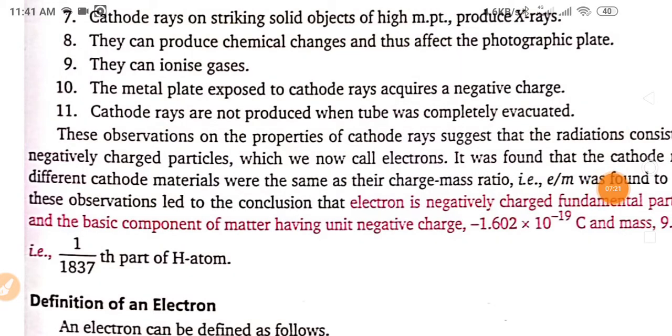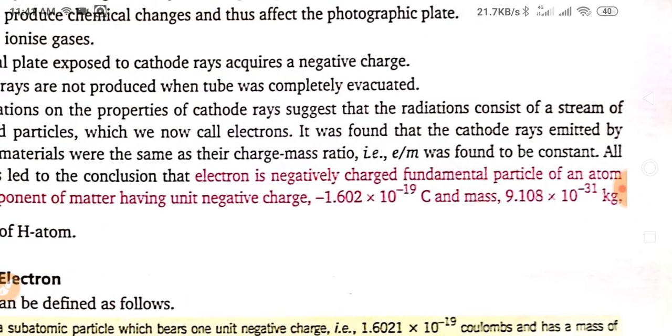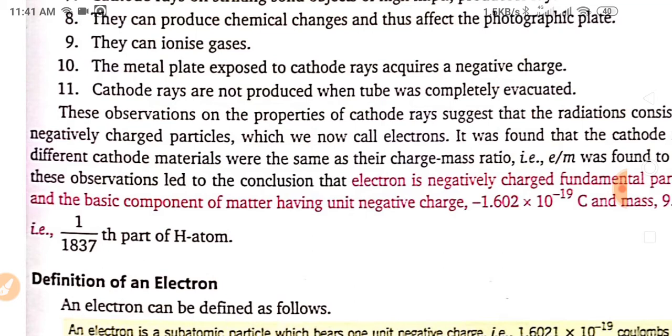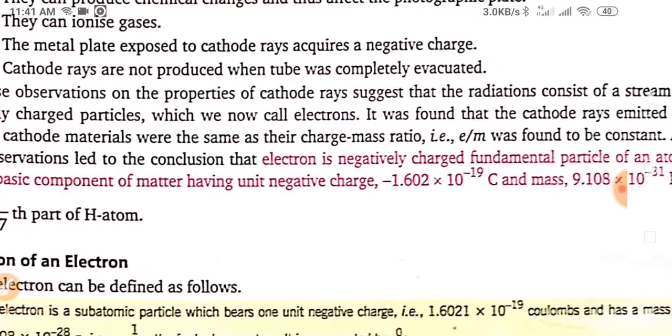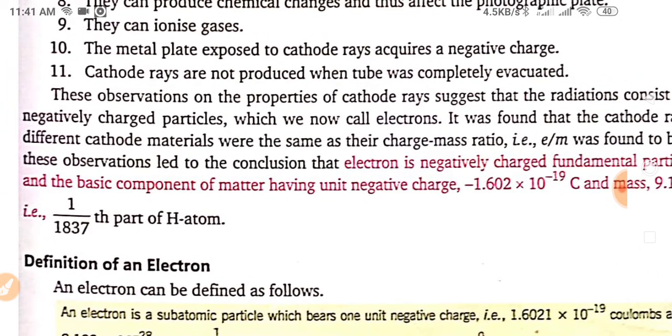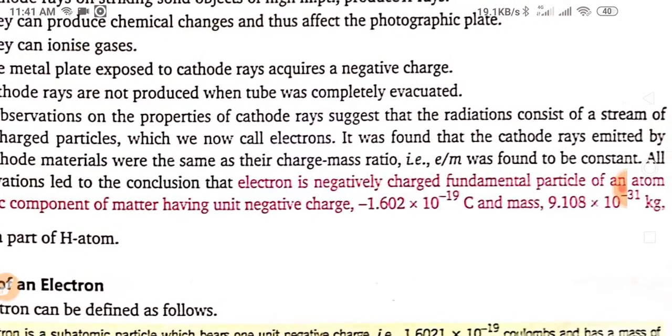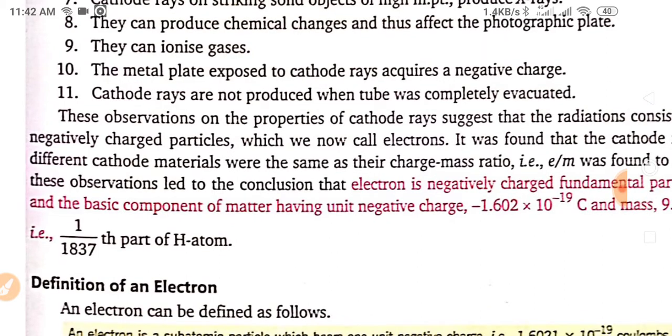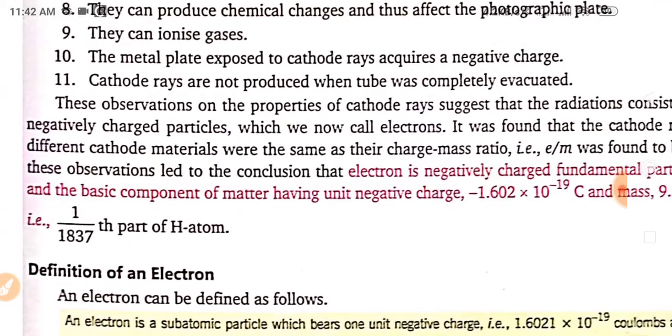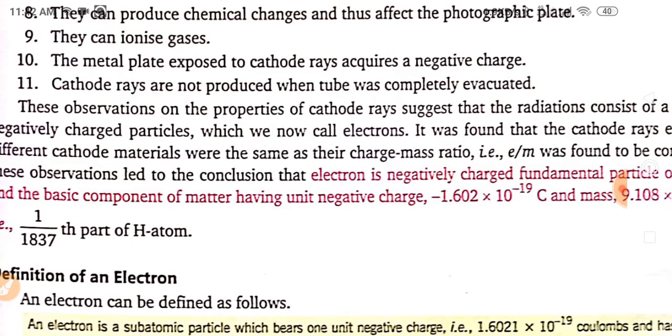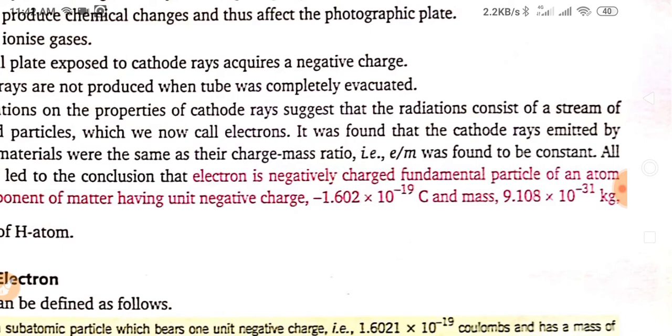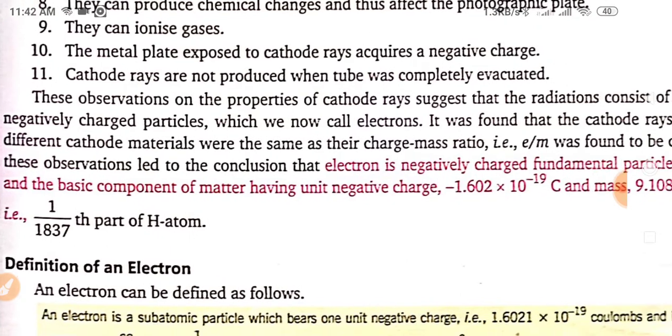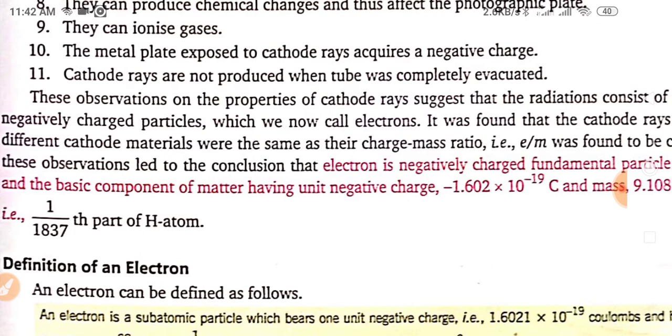These observations on properties of cathode rays suggested that the radiations consist of a stream of negatively charged particles which are now called electrons. It is found that the cathode rays emitted by different cathode materials were the same as their charge mass ratio. That is, electron upon mass was found to be constant. All these observations led to the conclusion the electron is negatively charged fundamental particle of an atom and the basic component of matter having unit negative charge. That is, -1.602 × 10^-19 C and mass 9.108 × 10^-31 kg. That is, 1 upon 1837th part of hydrogen atom. So you can say it is very light fundamental particle.